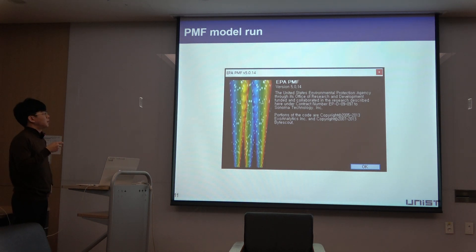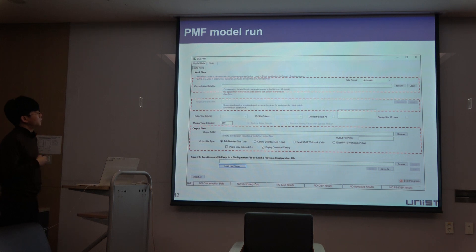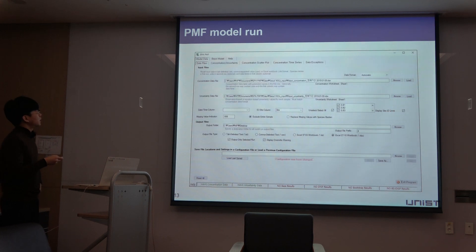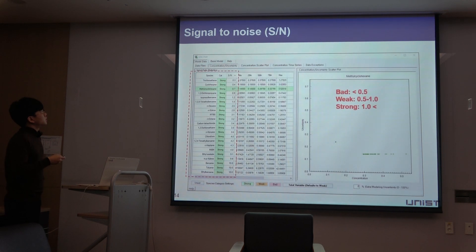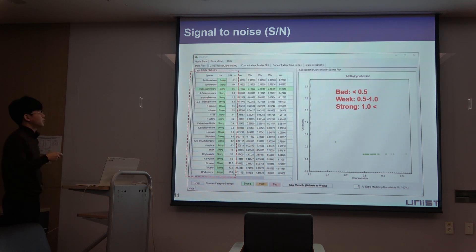At first, you will see an initial screen, and then you can navigate to the next screen. There are three parts to fill in: concentration, uncertainty that you already prepared, and the pathway of the output file. After filling in the blanks, you can get a positive signal and check the input data. As a first checkpoint, you can check the signal-to-noise ratio, which is the ratio of uncertainty to concentration. EPA suggests a range for each category — bad, weak, and strong — and you can change the species category accordingly.